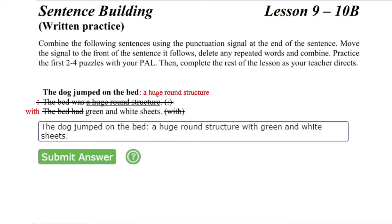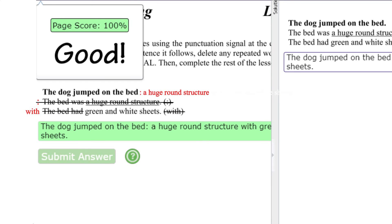Let's read the final combined sentence. The dog jumped on the bed, colon, a huge round structure with green and white sheets, period. That sounds like an acceptable English sentence. Click submit and see if the computer agrees. It does. The combined sentence was acceptable.